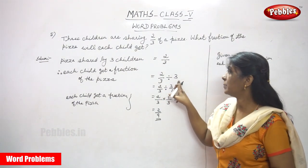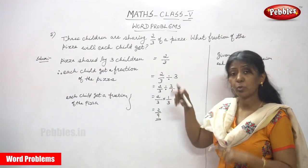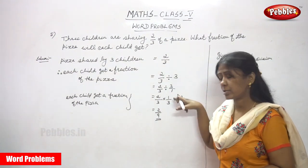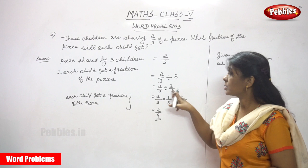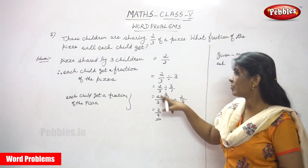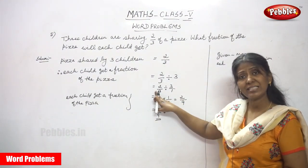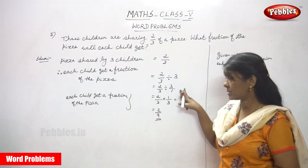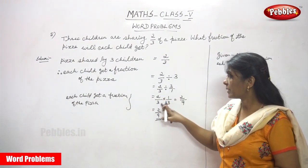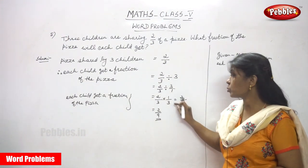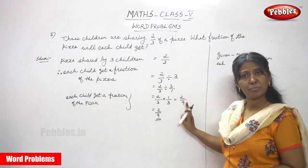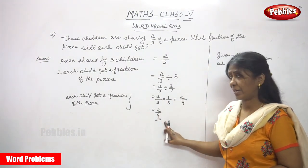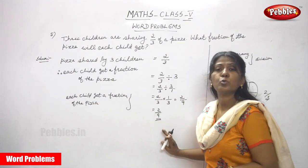So 2/3 is divided by 3. It's a whole number and this is a fraction, so you can't divide the fraction with the whole number. So what you're going to do — you have to make this whole number as a fraction. Assume one as the denominator: 3 divided by 1. This is the dividend and this is the divisor. So you have to reciprocate this divisor. So 2/3 into 1/3 — the reciprocal of the divisor is 1/3. After that you simply multiply: two into one gives two, three into three gives nine. So the answer is 2/9 fraction. Each child gets a fraction of pizza equal to 2/9.